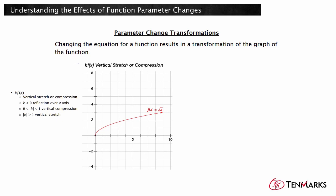k times f will result in a vertical stretch or compression of f. When k is negative, it also results in a reflection over the x-axis. The graph is stretched so that each point is k times as far from the x-axis as its corresponding point in f. When the absolute value of k is between 0 and 1, it is a vertical compression, and when the absolute value of k is greater than 1, it is a vertical stretch.